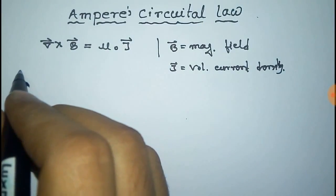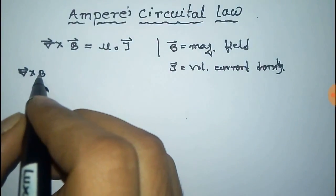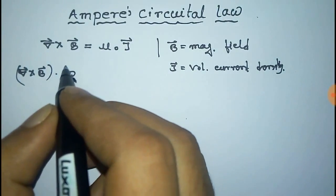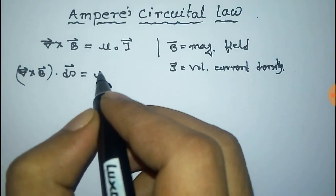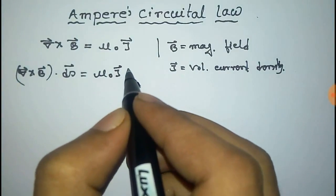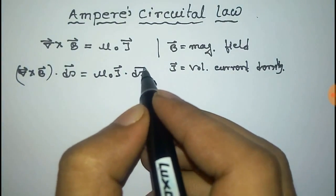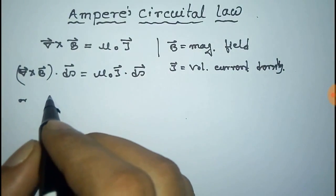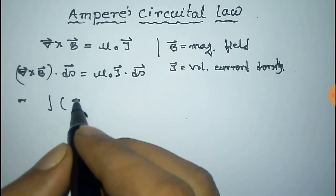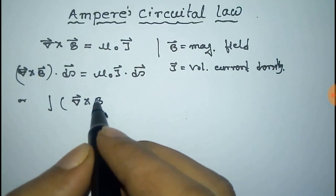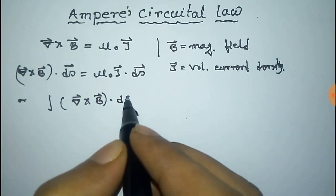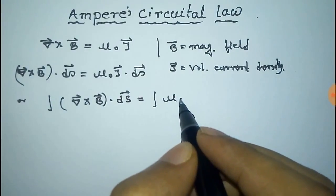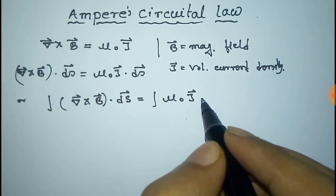Now we multiply ds vector on both sides. Now we can integrate on both sides so it will be curl B dot ds is equal to integral μ₀ J dot ds.